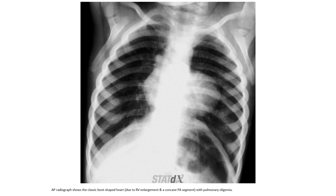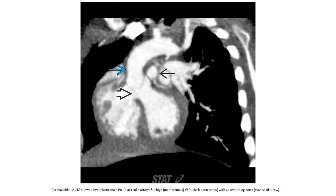Chest radiographs show a classic boot-shaped heart with pulmonary oligemia. CTA shows a hypoplastic main pulmonary artery and a high VSD with an overriding aorta.